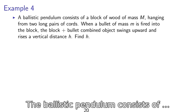Example 4. A ballistic pendulum consists of a block of wood of mass m hanging from two long pairs of cords. When a bullet of mass m is fired into the block, the block plus bullet combined objects comes upward and rises a vertical distance h. Find what h is.